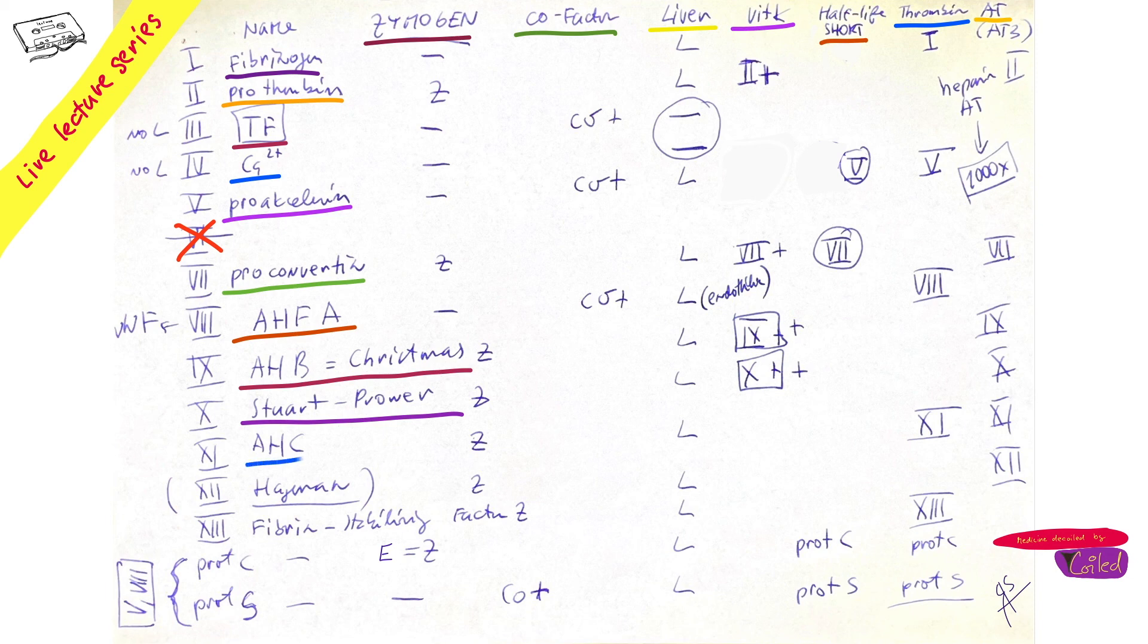Eleven is anti-hemophilic factor C. Twelve is Hageman. By the way, you don't have to remember Hageman too much nowadays. You can forget it in connection with bleeding because if you have decreased levels of Hageman, although you will have prolonged PTT times, you won't bleed. Hageman factor. Thirteen is very important: fibrin stabilizing factor because you have a fibrin mesh and this makes bridges between it and stabilizes the fibrin mesh. Protein C is protein C, protein S is protein S.